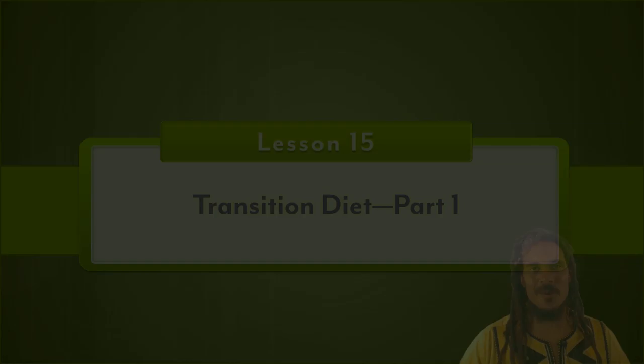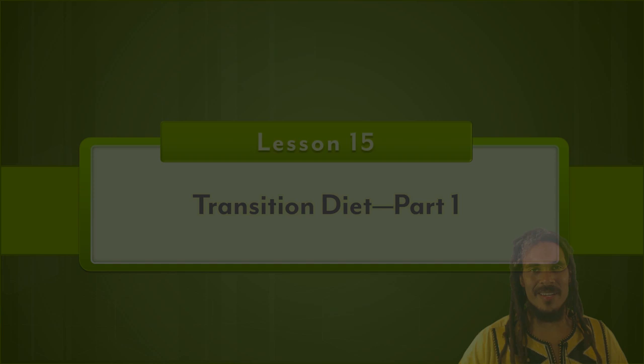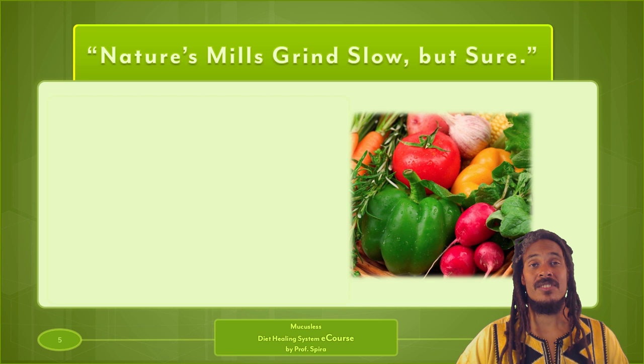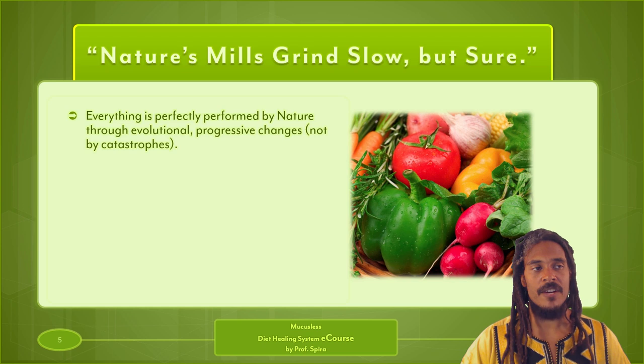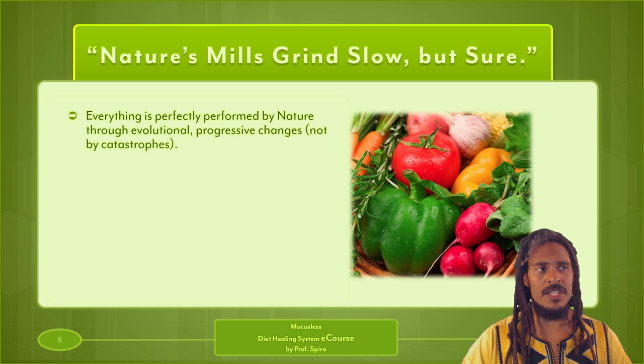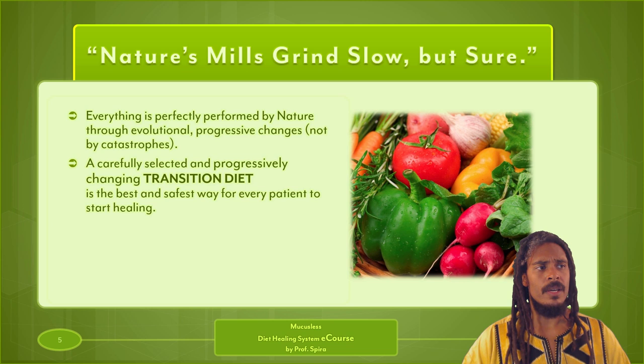Greetings. In this session we're talking about Lesson 15, Transition Diet Part One. Let's jump right in. Nature's mills grind slow but sure — everything is perfectly prepared by nature through evolutional, progressive changes and not by catastrophes. In other words, focus on gradualism and progressive change, and avoid overexerting yourself, which could ultimately end in catastrophe. A carefully selected and progressively changing transition diet is the best and safest way for every patient to start healing.